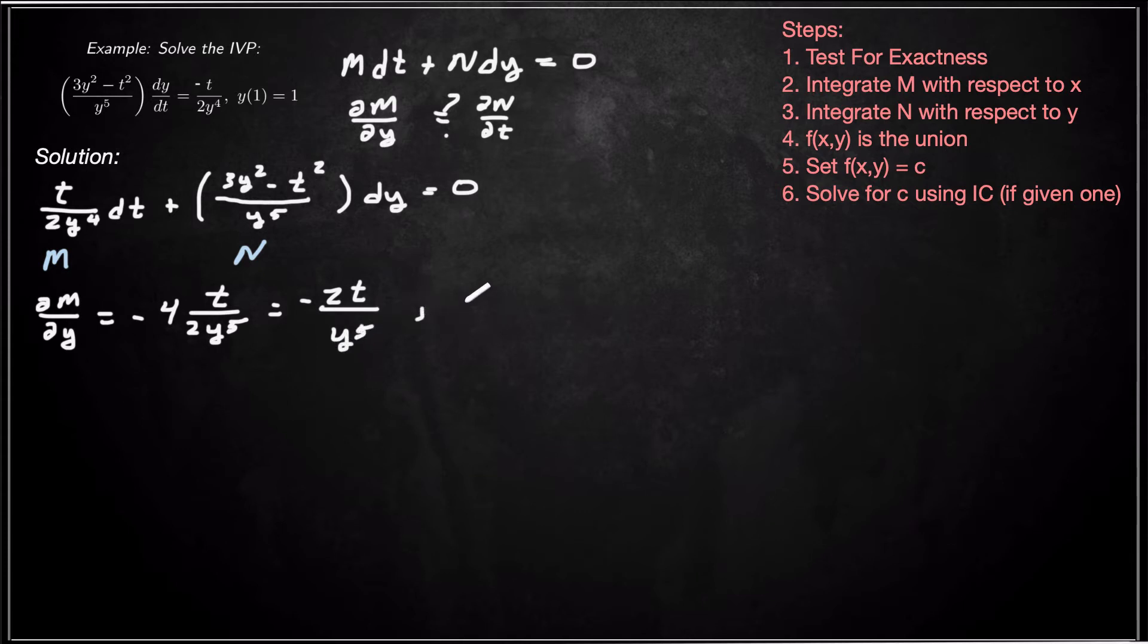So now we need to calculate ∂N/∂t. That is going to be -2t/y⁵. So we are exact. Test for exactness, good to go. So we tested for exactness.